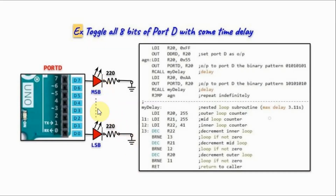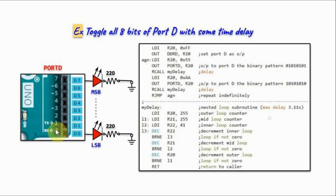In this first example, we have 8 LEDs connected to port D of the Arduino, and we want to toggle the LEDs with some time delay. Before we can upload the sketch onto the Arduino, we need to remove the LEDs from pins D0 and D1, since these two pins are the transmit and receive for serial communication, and they are used during the loading of the sketch onto the Arduino.